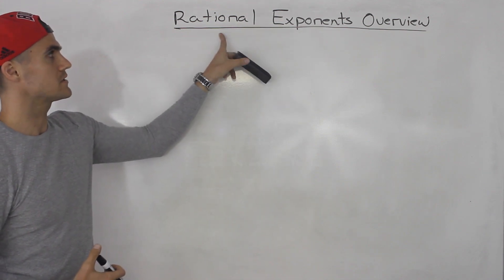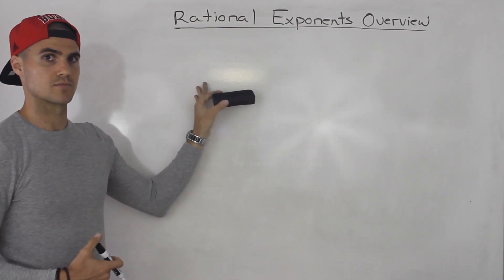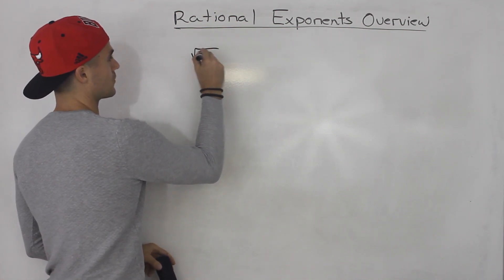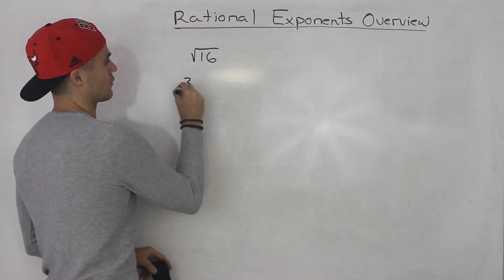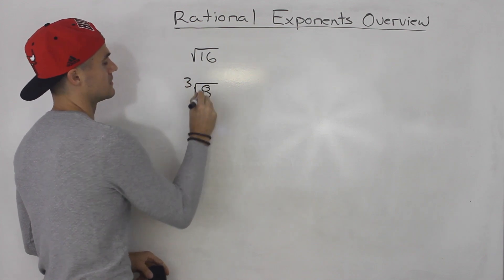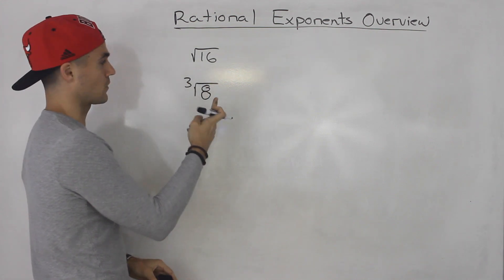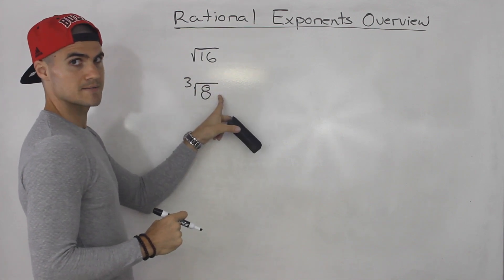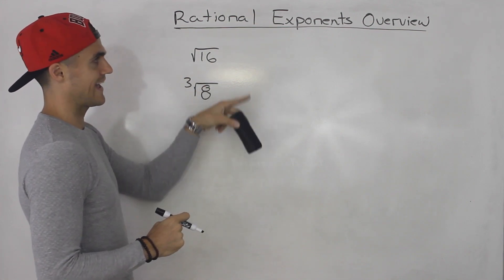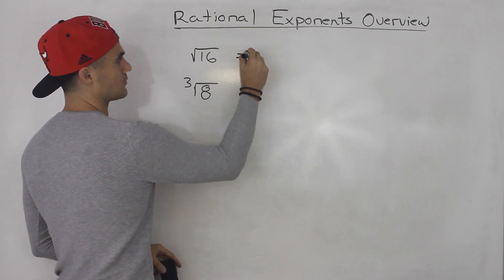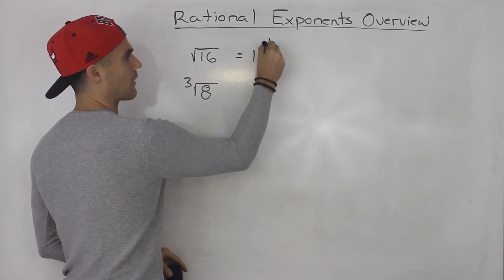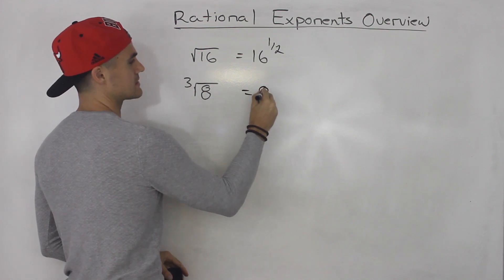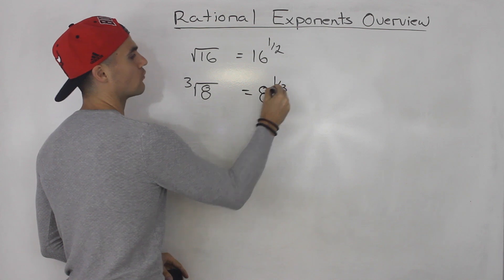Rational exponents come from radical expressions — square root expressions. For example, the square root of 16, or maybe the third root of 8. We know the square root of 16 is equal to 4, and the third root of 8 is equal to 2. Well, we can actually rewrite these in exponential form. The square root of 16 can be rewritten as 16 to the power of a half, or the third root of 8 can be rewritten as 8 to the power of 1 over 3.